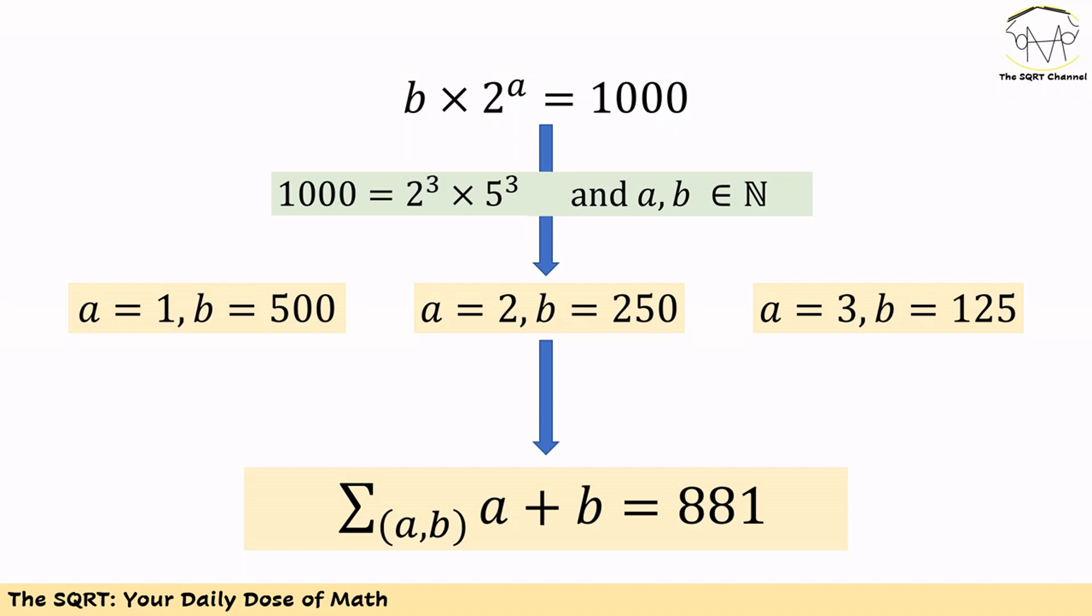Basically, there are several cases here. If a equals 1, then 2^a is 2, so b should be 500. On the other hand, if a is 2, then 2^a is 4 and b should be 250. As a third case, a can be 3, so 2^a is 8 and b should be 125.